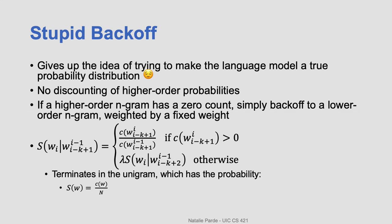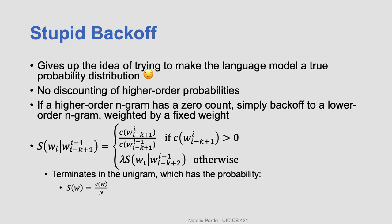Now the previous formula was admittedly a lot, and sometimes you just don't need something that complex. A final alternative that also works fairly well is stupid back-off, which doesn't do any discounting and also doesn't try to make the language model a true probability distribution. Instead, if a higher order n-gram has a frequency of zero, the technique simply backs off to a lower order n-gram multiplied by a fixed weight. You can set this weight to whatever you want, but the people who created this technique found that a value of 0.4 works well. That's truly all that there is to this technique.